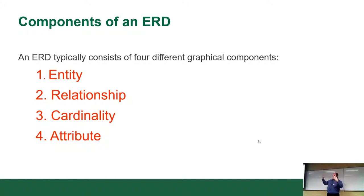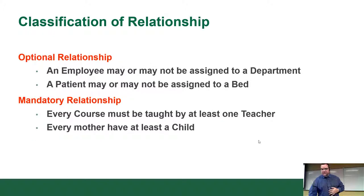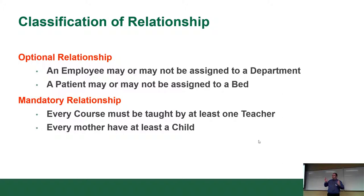When you look at an ERD, there are four pieces: the entity, the relationship, the cardinality, and the attributes. Attributes are optional at the conceptual level. Now, what is a relationship? There are two kinds: optional and mandatory. These correspond to the little symbols on the lines in the diagram.